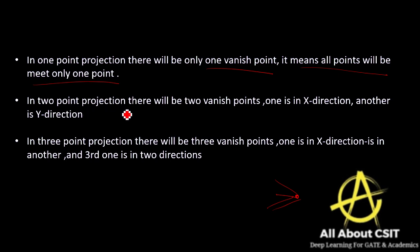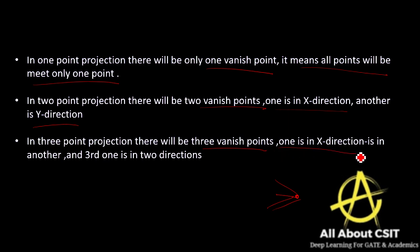In one-point projection there is only one vanish point — all points meet at one point only. In two-point projection there are two vanish points, one in the X direction and another in the Y direction. In three-point projection there are three vanish points: one in X, one in Y, and one in Z direction. This covers perspective and parallel projection.